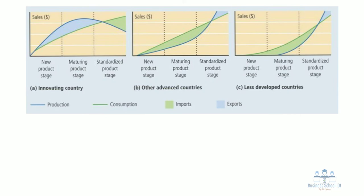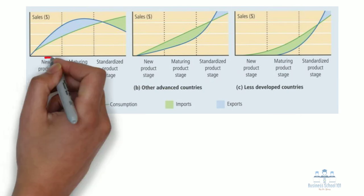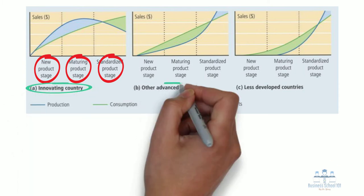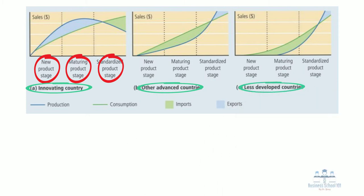As you can see in the picture, there are three stages contained within Vernon's theory: the new product stage, the maturing product stage, and the standardized product stage. In addition, Vernon categorized the world into three different groups: the innovating country, other advanced countries, and less developed countries.